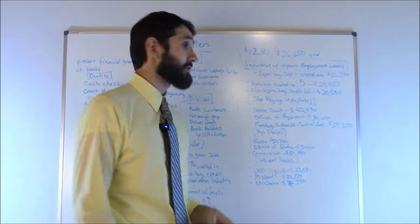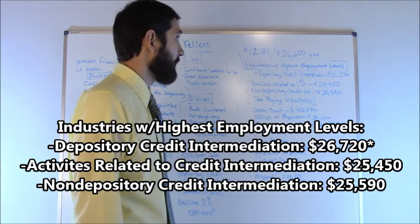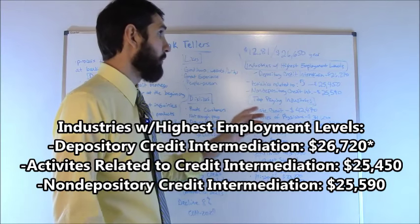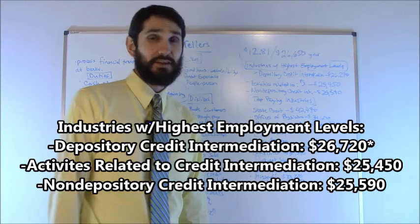First of all, what were the industries with the highest employment levels? Well depository credit intermediation came in at number one. $26,270 was the average there.